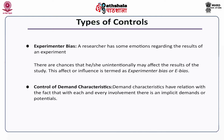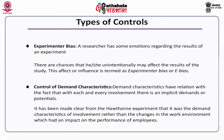The last type of control is control of demand characteristics. Demand characteristics have relation with the fact that with each and every involvement, there is an implicit demand or potential. It has been made clear from the Hawthorne experiment that it was the demand characteristics of involvement rather than changes in the work environment which had an impact on the performance of employees. To control demand characteristics, the researcher may adopt a double blind control in which neither the experimenter nor the contributors identify which is the treatment and which is the control, and instructions to contributors should be kept as impartial as possible.